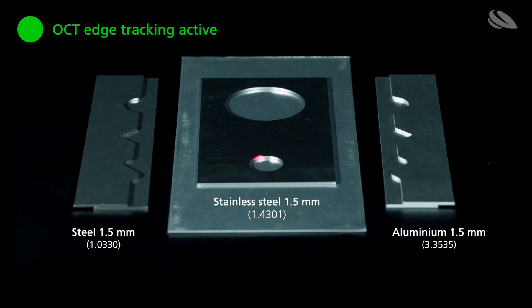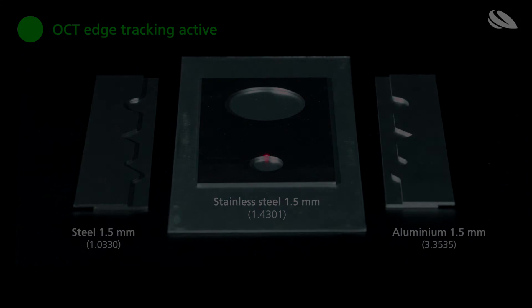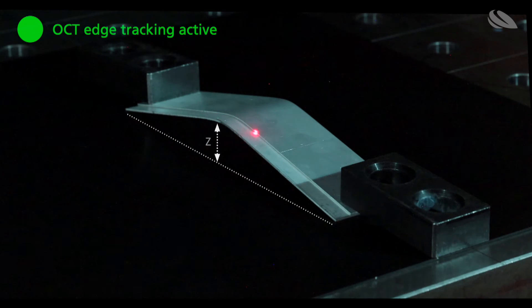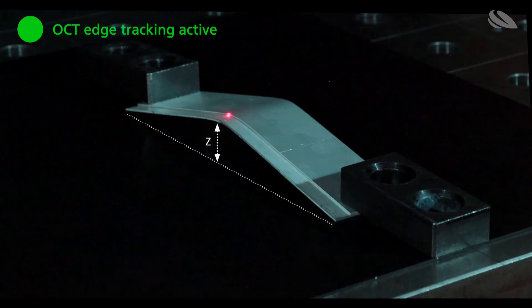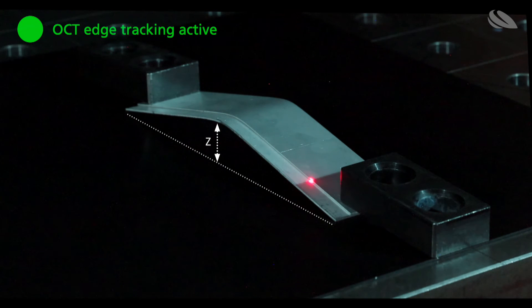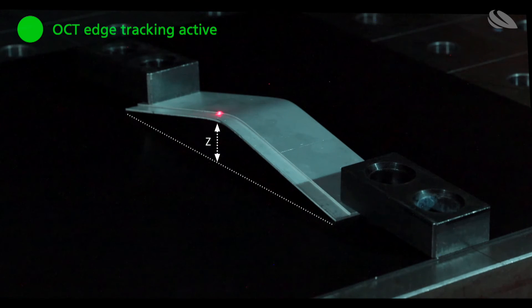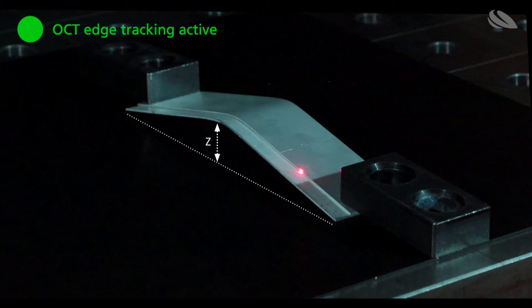The measurement is completely independent of the parts material. Edge tracking can be done in the X, Y, and Z directions. This is particularly useful for large workpieces on which thermal warpage needs to be taken into account.